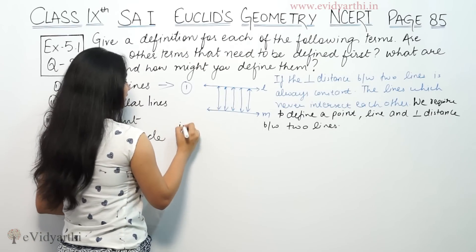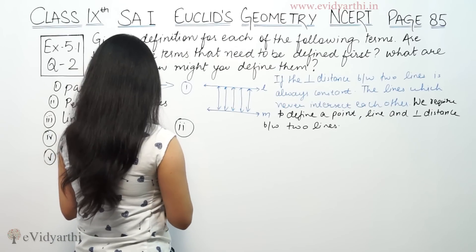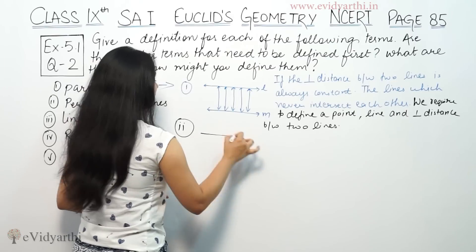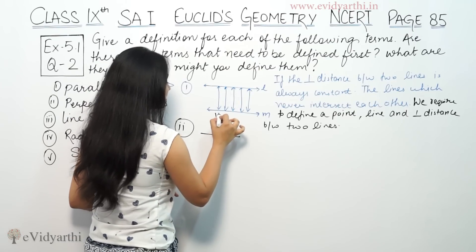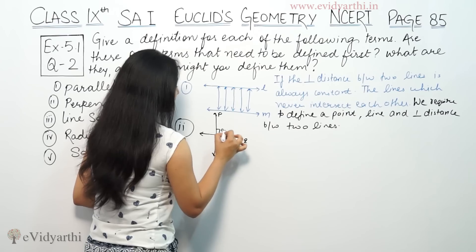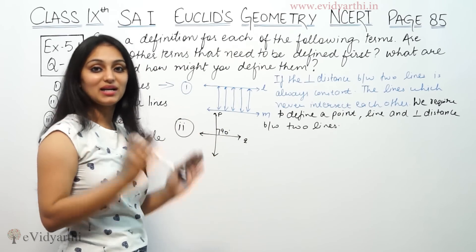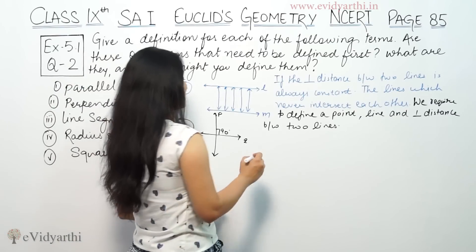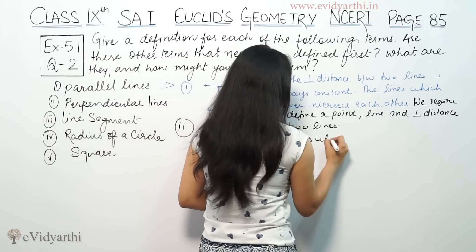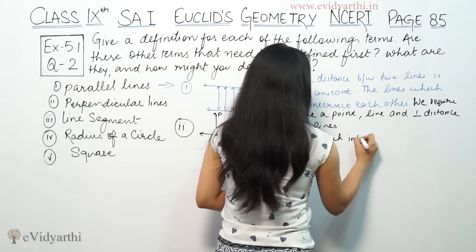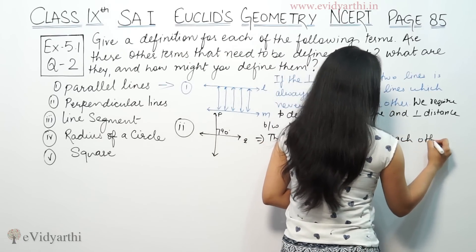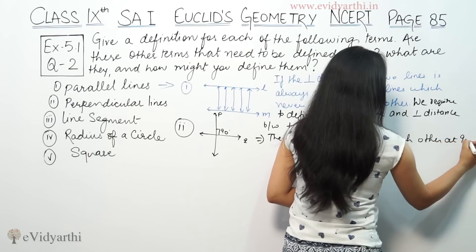Now second part, which is perpendicular lines. What are perpendicular lines? Suppose this is P and this is Q. These lines intersect at 90 degrees. So the lines which intersect each other at 90 degrees.